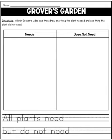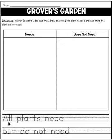Okay boys and girls, for this activity called Grover's Garden, we want you to watch the Grover video that was on your activity list. Then after watching the video, we want you to draw one thing the plant needed and one thing the plant did not need. After you draw a detailed picture with crayons, you're going to use your pencil and fill in the sentence down here.